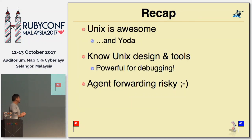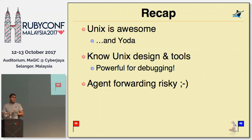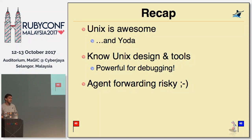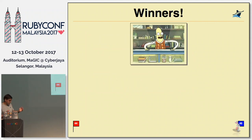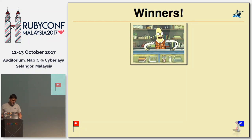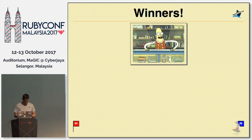In summary: Unix is awesome, and it's Yoda. It's really important to understand Unix design and tools — if you really get to know these tools, you'll find that you solve problems very quickly, especially in production environments. And lastly, agent forwarding is extremely risky, so evaluate your own environment and decide if it makes sense for you. Here are the winners from the contest. First prize winner is Lincoln Lee — he solved it in less than 12 hours. Next is Faisal Zakaria. And lastly, Hassan and Ahmed. Congratulations.